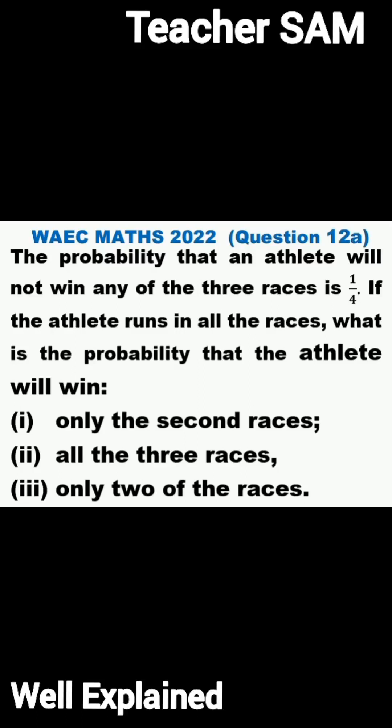The probability that an athlete will not win any of the three races is 1 over 4. If the athlete runs in all the races, what is the probability that the athlete will win only the second race?